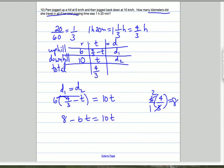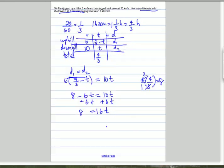We add 6T to both sides. So 8 equals 16T. Divide both sides by 16. So T is a half.